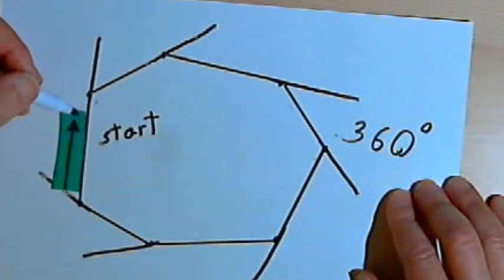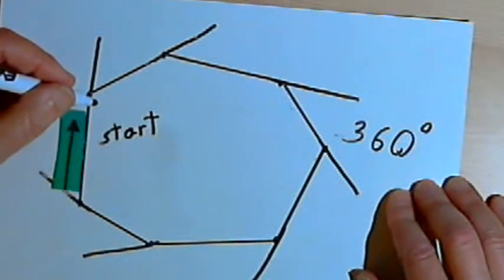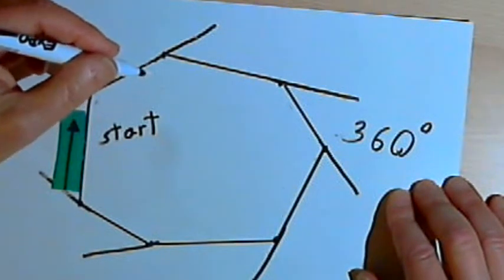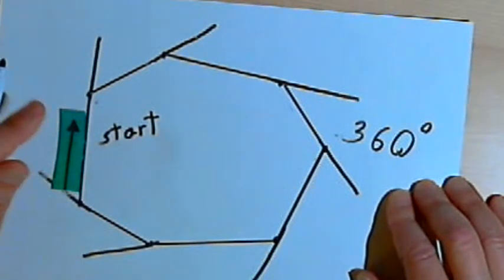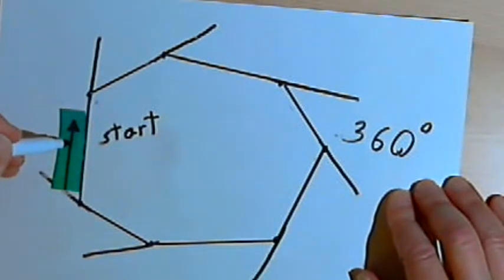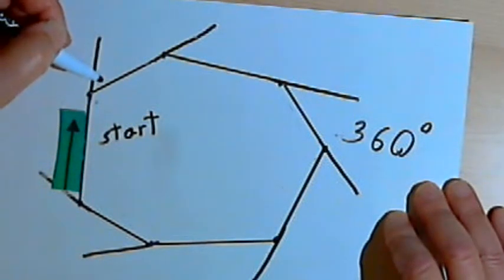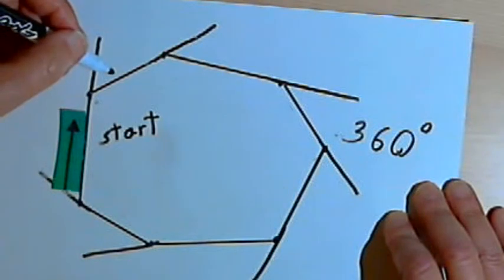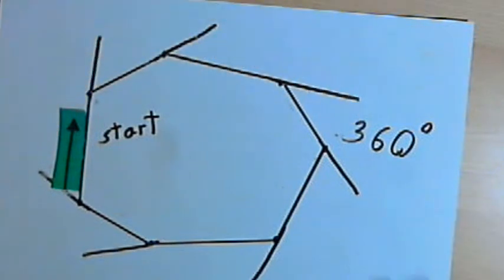Now if you think about it, this should hold true for any convex polygon. No matter how many sides there are, we're still going to have to go all the way around. The arrow is going to rotate one complete time until it comes back to where it started, and that means it will have rotated through 360 degrees. So the sum of the exterior angles for any convex polygon is going to be 360 degrees. And that's all there is to it. Take care, I'll see you next time.